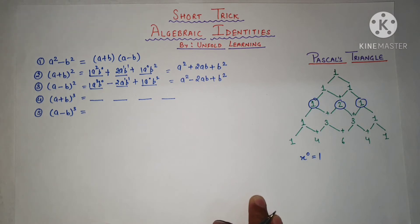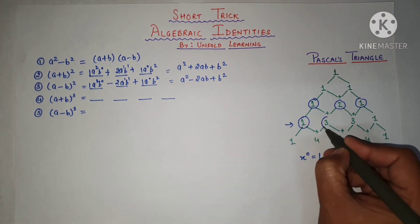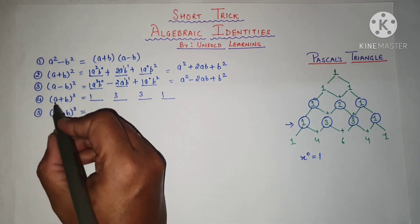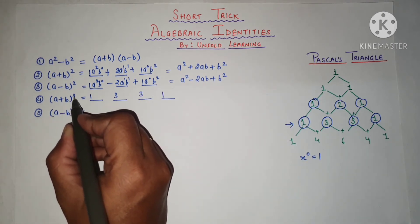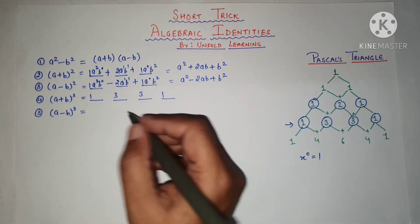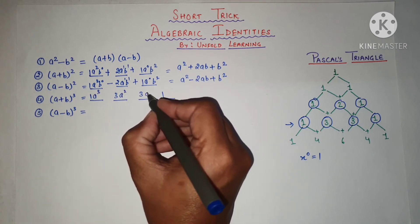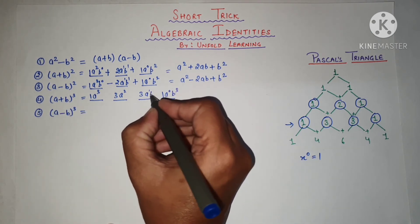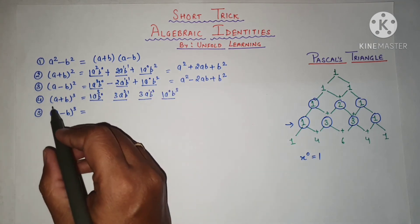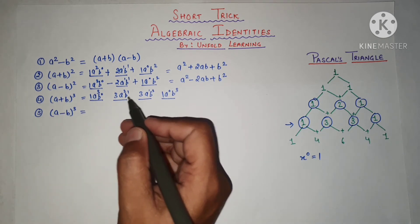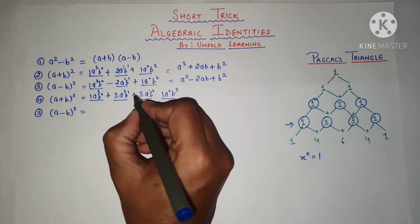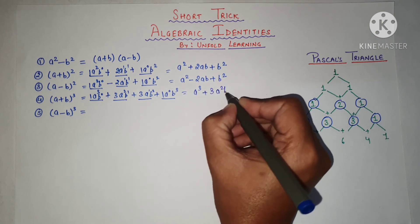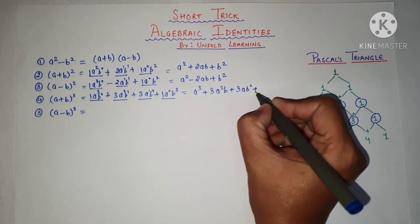Next is (a + b) whole cube. Since the degree is 3, we have 4 terms with coefficients 1, 3, 3, and 1 from Pascal's Triangle. For A, we write decreasing powers: A cubed, A squared, A to the power 1, A to the power 0. For B, starting from the last term: B cubed, B squared, B to the power 1, B to the power 0. Since (a + b) is all positive, every term gets a plus sign. So the formula becomes A cubed plus 3A squared B plus 3AB squared plus B cubed.